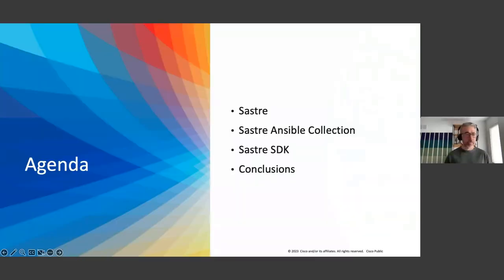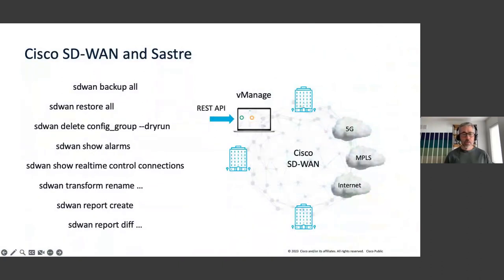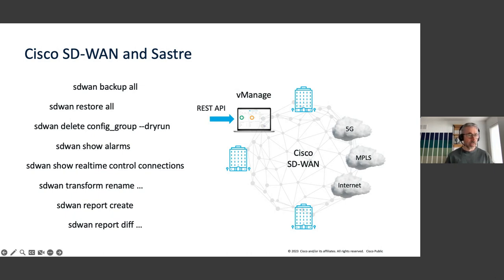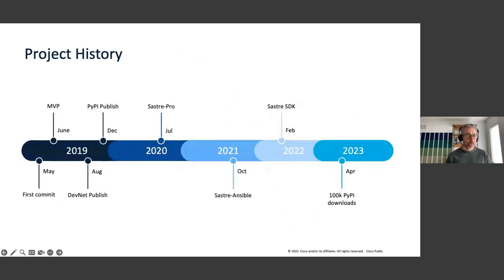As a CLI, SASTRE provides commands like SD-WAN backup all, SD-WAN restore all, show alarm, and a number of other commands that you can access from the CLI to achieve different tasks on your SD-WAN.